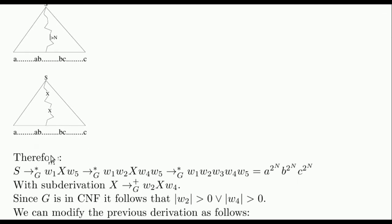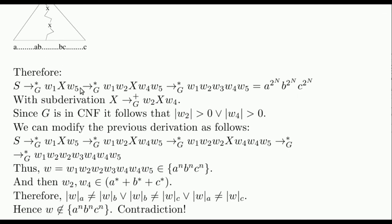So there exists a derivation of this form, and it will contain a sub-derivation from X like this. Since G is in the Chomsky normal form, there are no lambda productions, no unary productions in G. And so the sub-derivation from X generates some symbols. It follows that either W_2 or W_4 have size greater than 0.